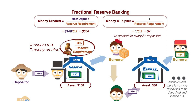Here's fractional reserve banking to help people understand. Basically, your money multiplier is one divided by your reserve requirement. If it's a 20% reserve requirement, it's a 5x multiplier — that means commercial banks can create up to five times the amount of money. If it's 10%, then it's 10 times. That means approximately 10 times, or 97%, can be created through commercial bank lending.